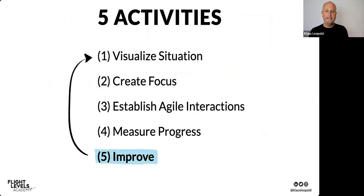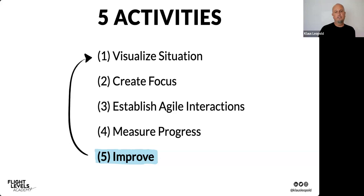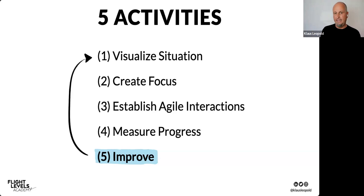Activity number five: improve. In Flight Levels land, we have the saying that whenever you look at a Flight Levels system, what you see is the latest state of misunderstanding. It might be right for now, but maybe tomorrow reality is different — and it's harder to bend reality than to change a Flight Levels system. You're never ever done; you're always reiterating over these five activities.